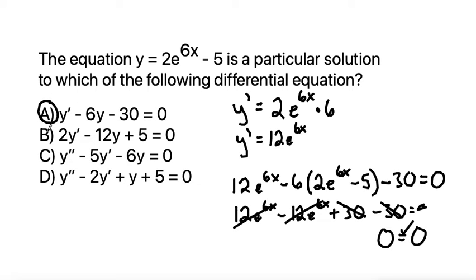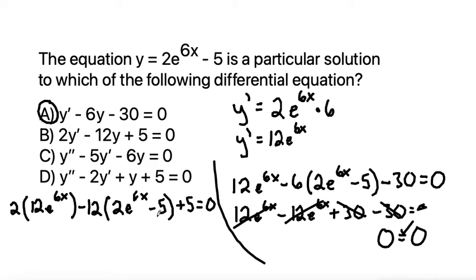Showing for letter B how we can substitute it in to verify that it's not a correct answer would be subbing in in the same way that we did before. We would have 2 times y prime is our 12e to the 6x that we found before. And then minus 12 times y is our 2e to the 6x minus 5. Then we have a plus 5 equals 0.